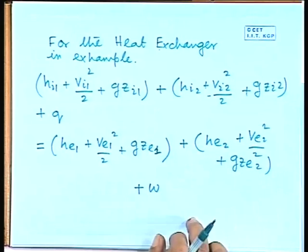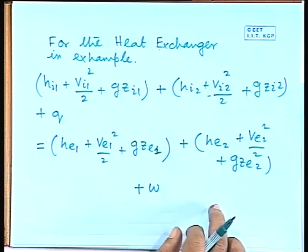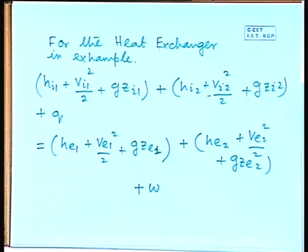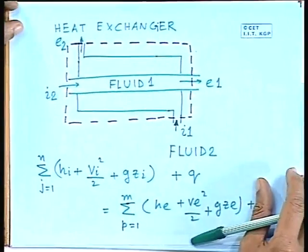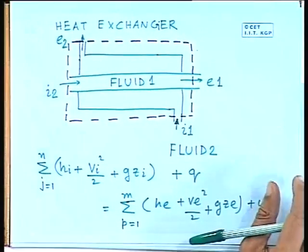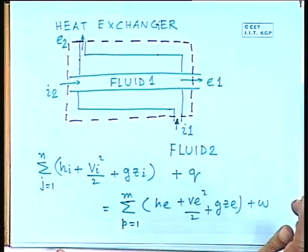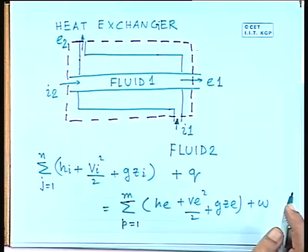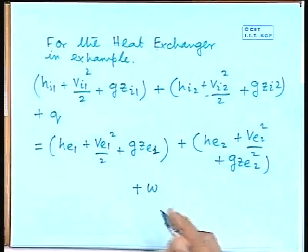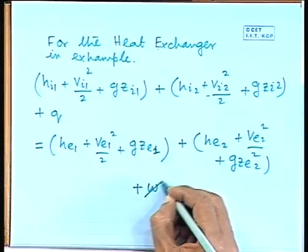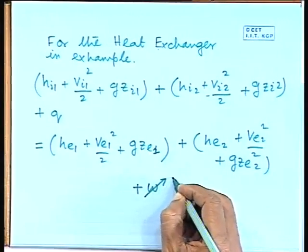We are getting the equation for heat exchanger here and if we see the control volume which we have drawn taking both the liquids together. There is no work interaction with the surroundings, so we can put this particular term equal to zero.